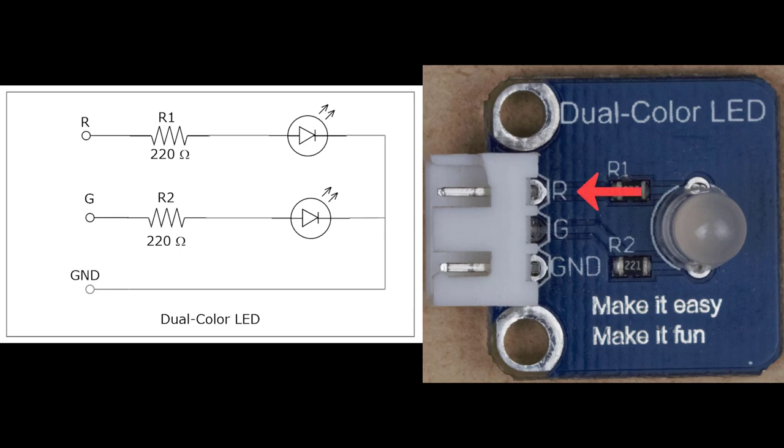The first label that we're concerned about is the R. So we can see an R on the dual color LED board and then we see an R on the schematic.